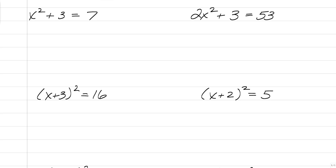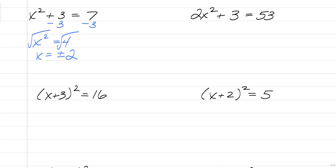When you're solving, what you want to do is first get the squared part of the equation by itself. The first step is just going to be to subtract 3 from both sides, as if we were solving any old equation. So we have x squared is equal to 4. Once you get the squared part by itself, you're going to square root both sides and get x is equal to plus or minus 2. You can check these with your graphing calculator, but remember — unless otherwise stated, you're going to want to leave your answers exact.